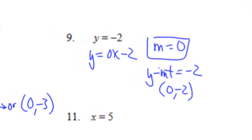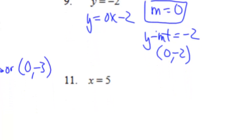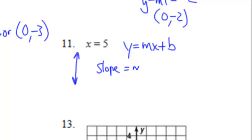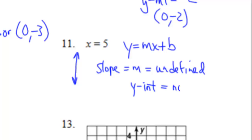For number 11, notice there's no y variable at all — just x equals 5. This tells us all points where x is always 5. We can go over to 5 and up or down to any number, giving us a vertical line. Vertical lines generally do not cross the y-axis, so this has an undefined slope — m is undefined. And the y-intercept: there is none.